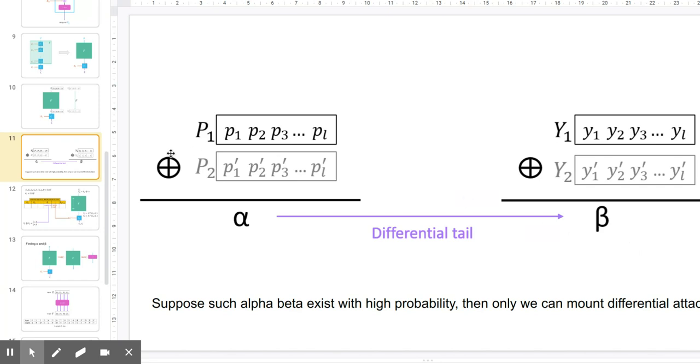The difference is found by XORing the bits of P1 and P2, so that we have P1 XOR P1 dash, P2 XOR P2 dash, P3 XOR P3 dash, et cetera, to give us L bit alpha. Similarly, we have Y1 XOR Y1 dash, Y2 XOR Y2 dash, et cetera, to give us L bit beta.